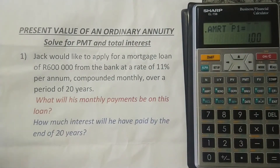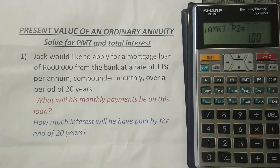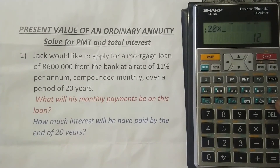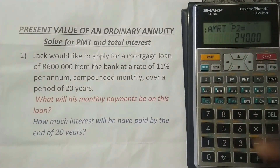To see the interest from the very beginning — from the first period until the end of 20 years — leave P1 as one. That's the starting point. Then press the downward arrow to get to P2, which is the last period you want to see the amounts for. P1 is left at one; P2 we want all the way to year 20. Since it's compounded monthly, we take 20 multiplied by 12 equals 240, and press enter. You can see it's showing from compounding period one until compounding period 240.